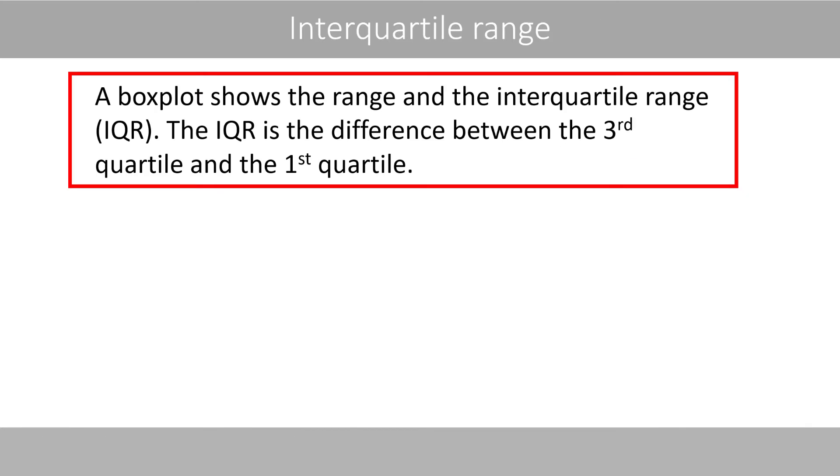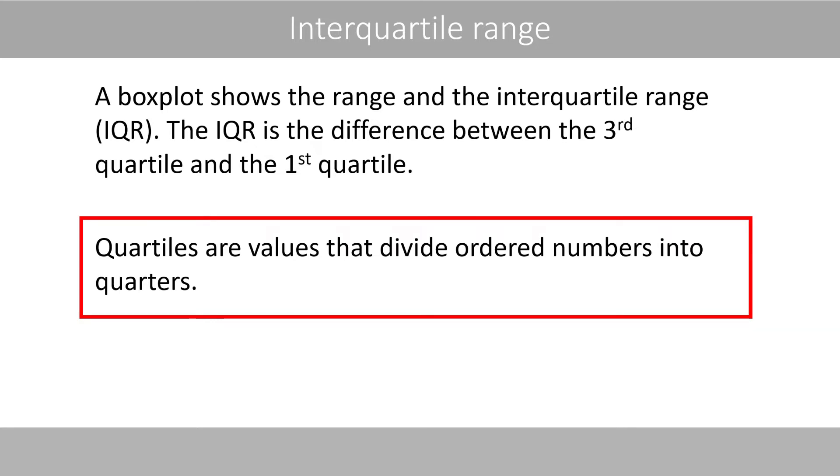A box plot shows the range and the interquartile range. The IQR is the difference between the third quartile and the first quartile. Quartiles are values that divide ordered numbers into quarters.